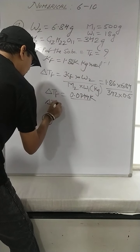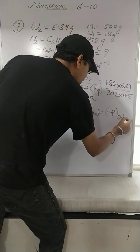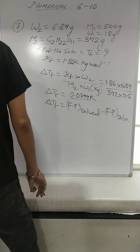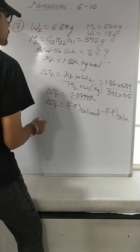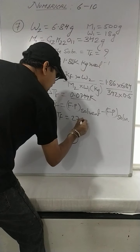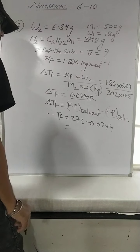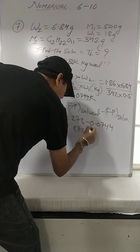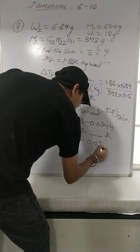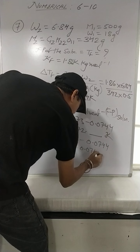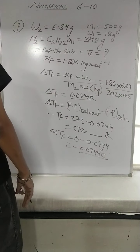Now Delta Tf = freezing point of solvent − freezing point of solution. Freezing point of solvent (water) = 0°C = 273 K. So Tf of solution = 273 − 0.0744 = 272.9256 K. Alternatively in Celsius: Tf = 0 − 0.0744 = −0.0744°C. You can express the answer in either Kelvin or degree Celsius.